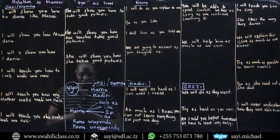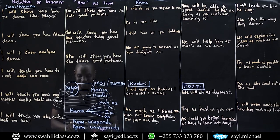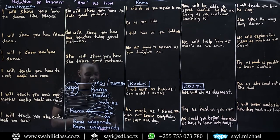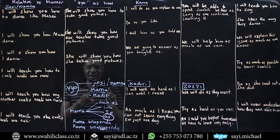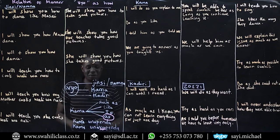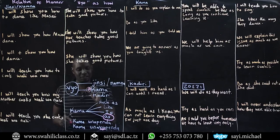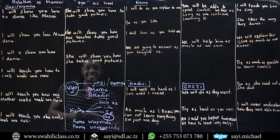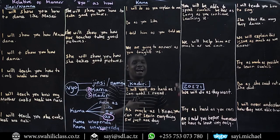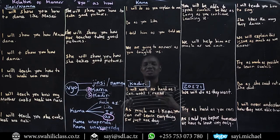So if you write a sentence like kama unapenda and you have vio, this kama is not if — this kama now is as. And that's the second friend of vio. Rafiki namba tatu wa vio is kadiri. Kadiri is for sentences like as far as, as much as, as long as.